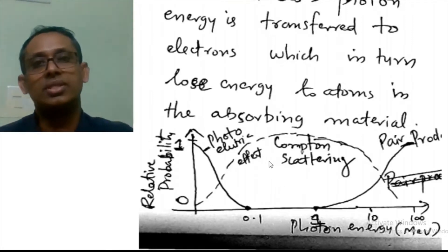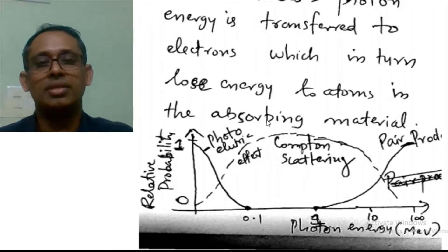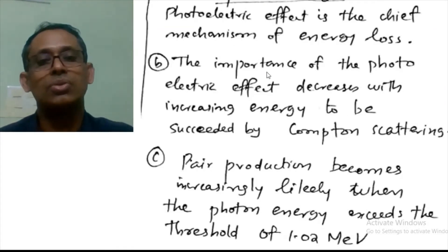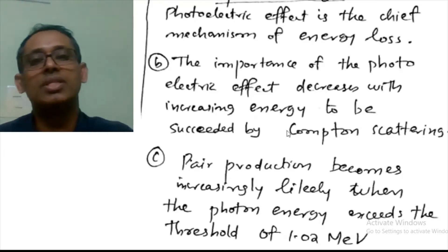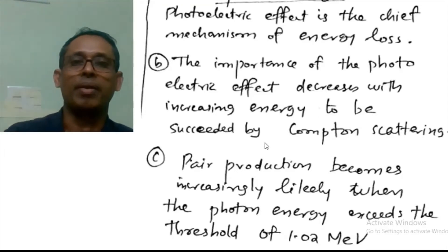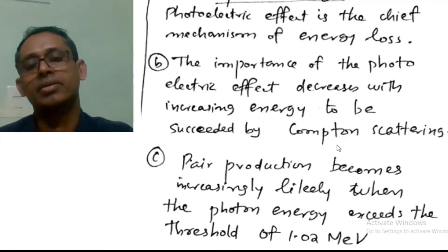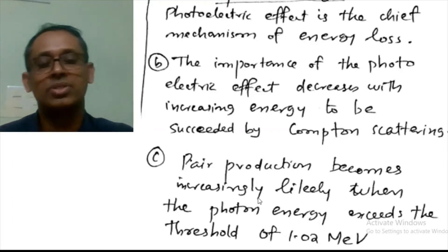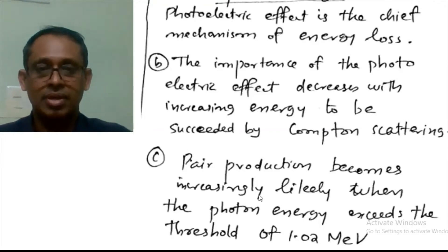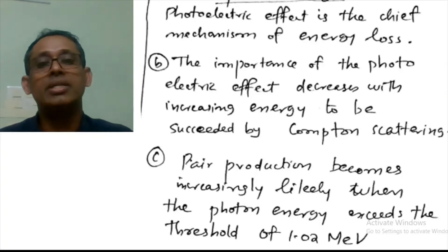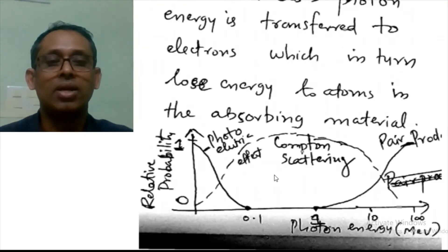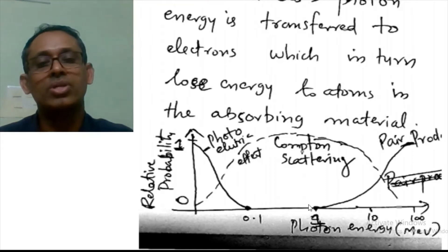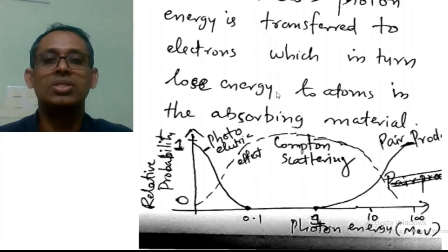This is how these three processes occur in the absorbing material. At low photon energies, the photoelectric effect is the chief mechanism of energy loss. Its importance decreases with increasing energy, and the photoelectric effect is succeeded by Compton scattering. Then pair production becomes increasingly likely, dominating when the photon energy exceeds the threshold value of 1.02 MeV.